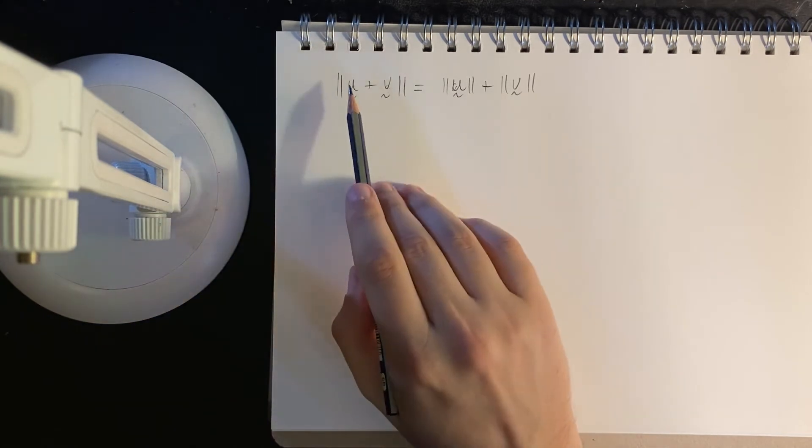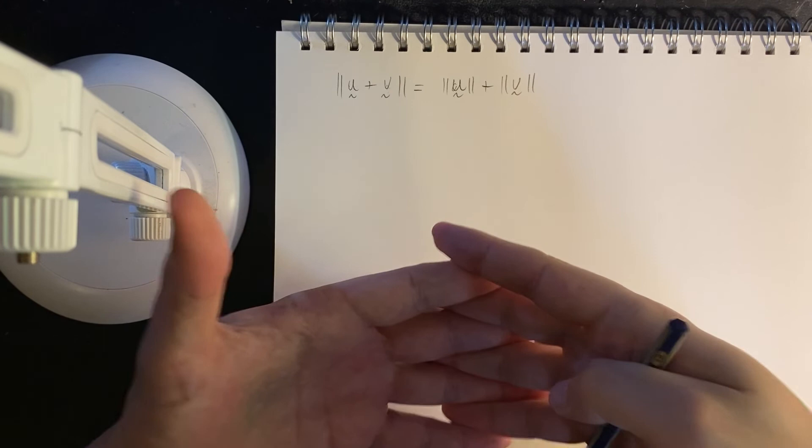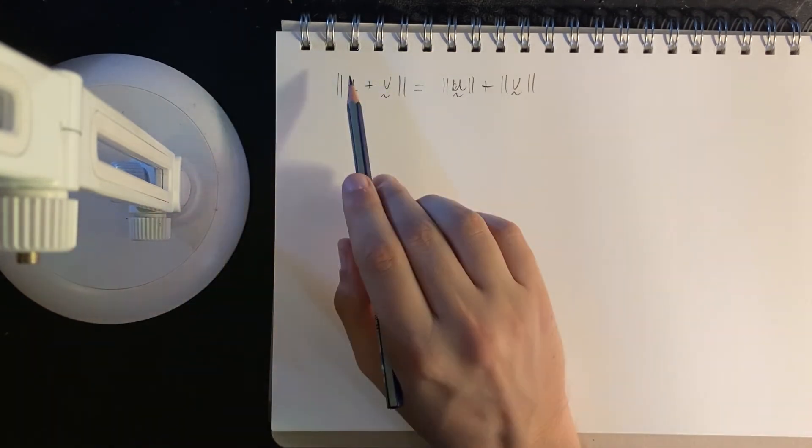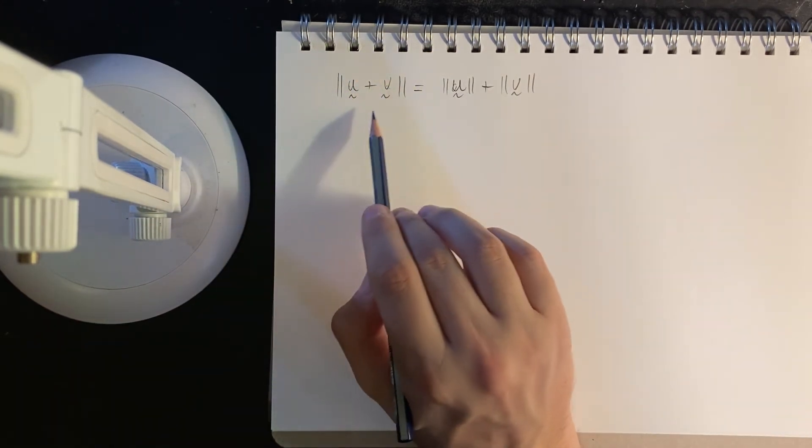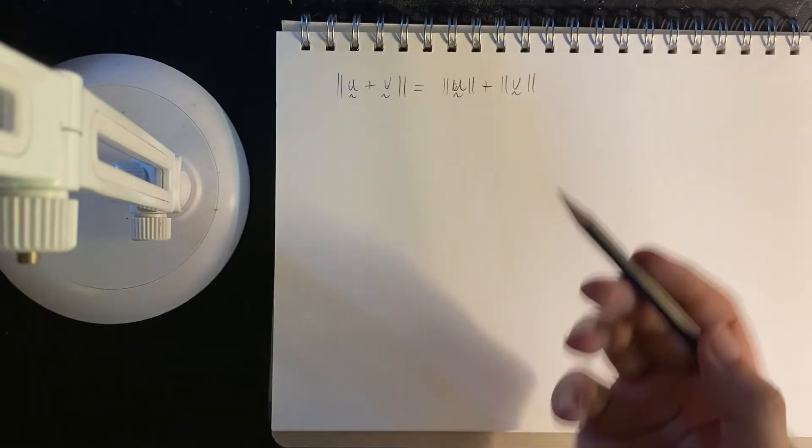But if they have opposite signs, 2 and negative 1, sum together and cancel each other out, like Coke and Pepsi. So this would have a magnitude of 1. But then on the right hand side, this would be a magnitude of 1 plus 2 is 3.